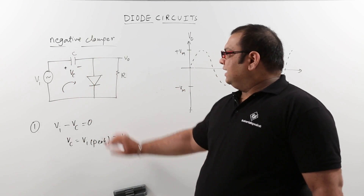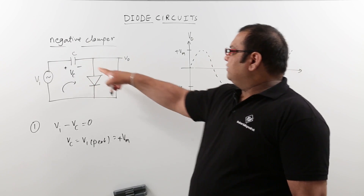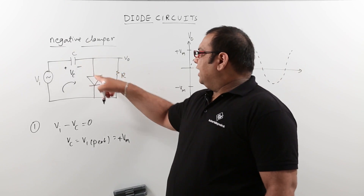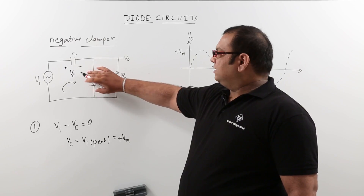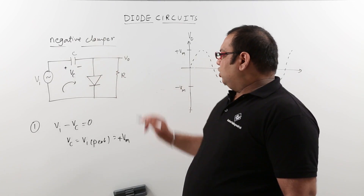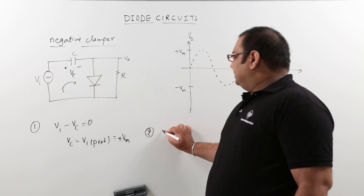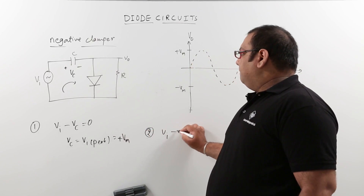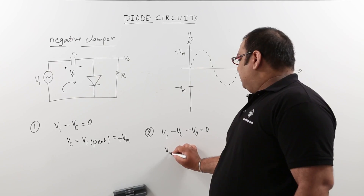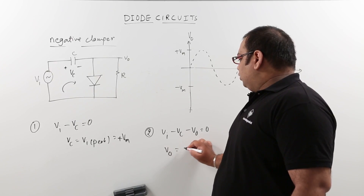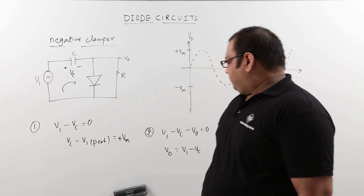Now the capacitor is storing plus Vm. When the stored voltage is plus Vm, the diode goes into reverse bias. For the output in this case, taking the loop equation again: Vi minus Vc minus V0 equals zero, giving us V0 equals Vi minus Vc.